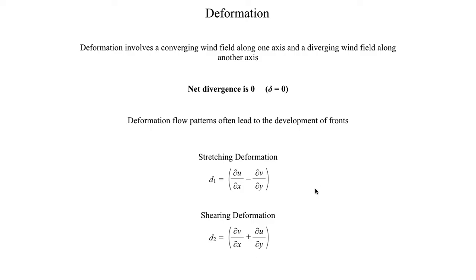But there is in fact a difference between the two. It's really a mathematical difference, it's not much of a physical difference. Both of these represent deformation pattern, which is convergence along one axis, divergence along the other axis. It's just one of these is rotated 45 degrees. So really not much of a physical difference in the atmosphere, it's mostly just a mathematical thing.